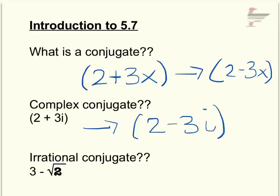An irrational conjugate will be new to this section. If you have a radical — which is irrational as long as it's not a perfect square — you just change the sign of the irrational number. So instead of 3 minus the square root of 2, you'd have 3 plus the square root of 2. Those are conjugates — nothing tricky.